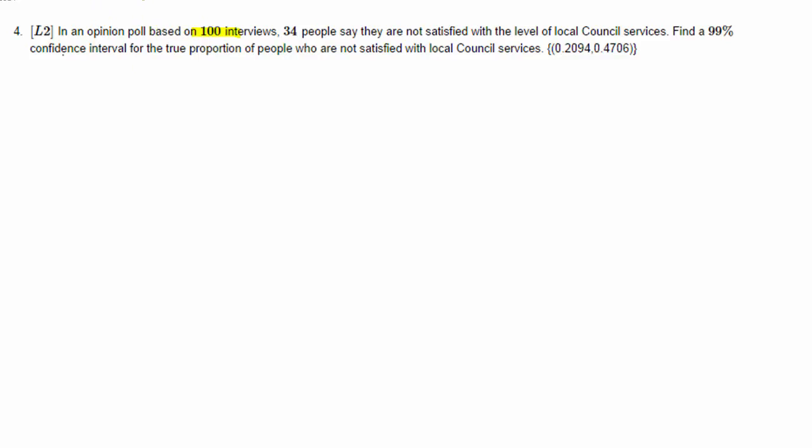This is a question about confidence interval for proportion. We have a sample size of 100. Of those, 34 people say they are not satisfied with the local council services, so that makes a sample proportion P of 0.34.